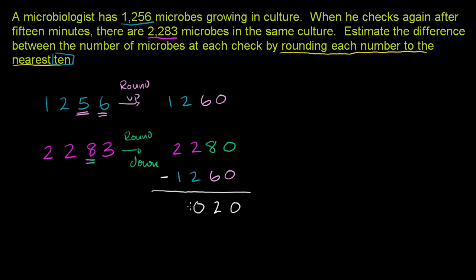2 minus 2 is 0, and then 2 minus 1 is 1. So when we rounded each number to the nearest 10 and then took the difference, our estimated difference is 1,020.